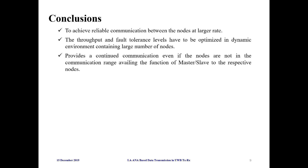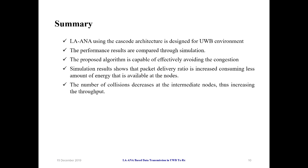In conclusion, reliable communication between nodes at a larger rate can be achieved, and throughput and fault tolerance levels are optimized in a dynamic environment containing a large number of nodes. It provides continuous communication even when nodes are not in communication range, awaiting the master-slave function assignment. The system uses a cache-code architecture for a UWB environment, and performance results compared in simulation show it is capable of effectively avoiding congestion.